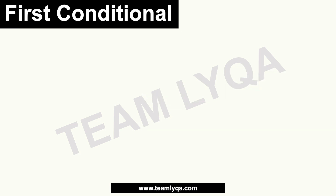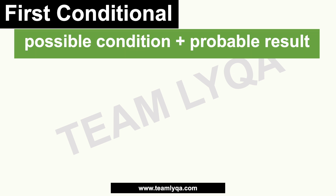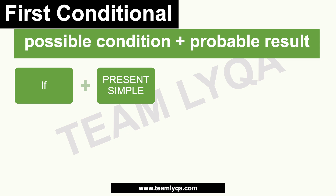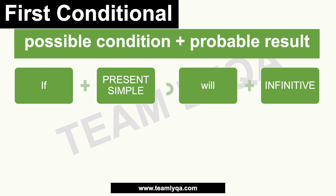Now let's go to the first conditional. We use it when we're talking about a possible condition or possible action, and there's a probable result or outcome following it. The structure is: 'if' plus a present simple clause, then a comma, then 'will' plus an infinitive.